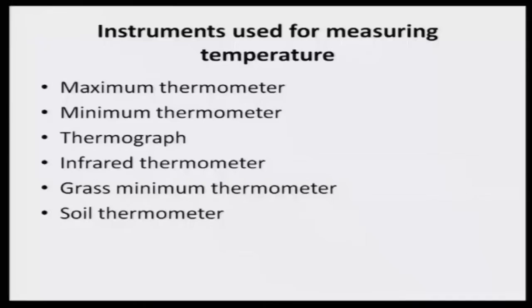The grass minimum thermometer is very important — it is placed 15 centimeters above the ground level. When the grass minimum temperature goes below a threshold, there is every possibility of frost, which is important for cold countries and areas where temperature drops below 10 degrees centigrade. There are also soil thermometers placed at depths of 5, 10, 15, 20, 30, and 60 centimeters to measure soil temperature at different levels.